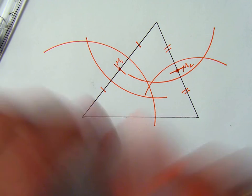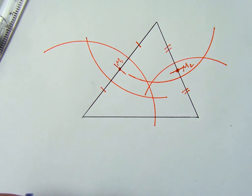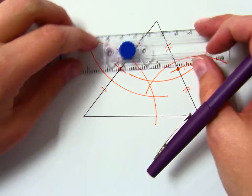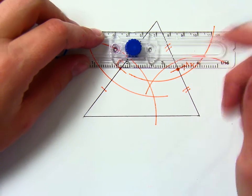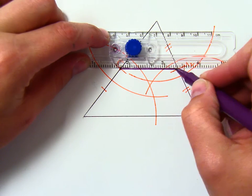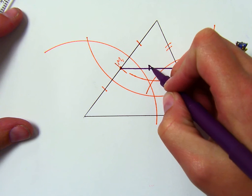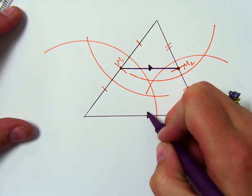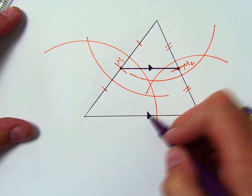And last but not least, you are going to connect M1 to M2. There is your mid-segment. The mid-segment is parallel to the side it does not attach to.